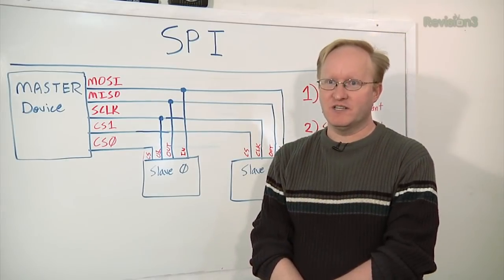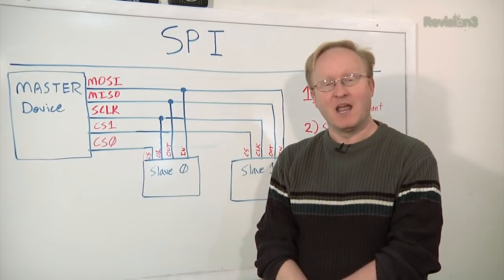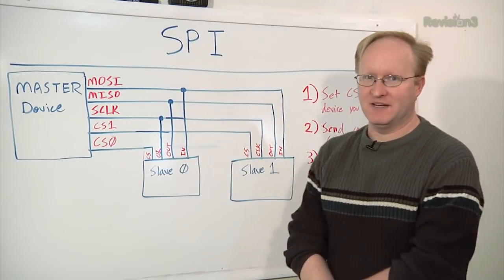SPI is faster than I2C. It's also just as common. However, having to have a chip select line is kind of a disadvantage.